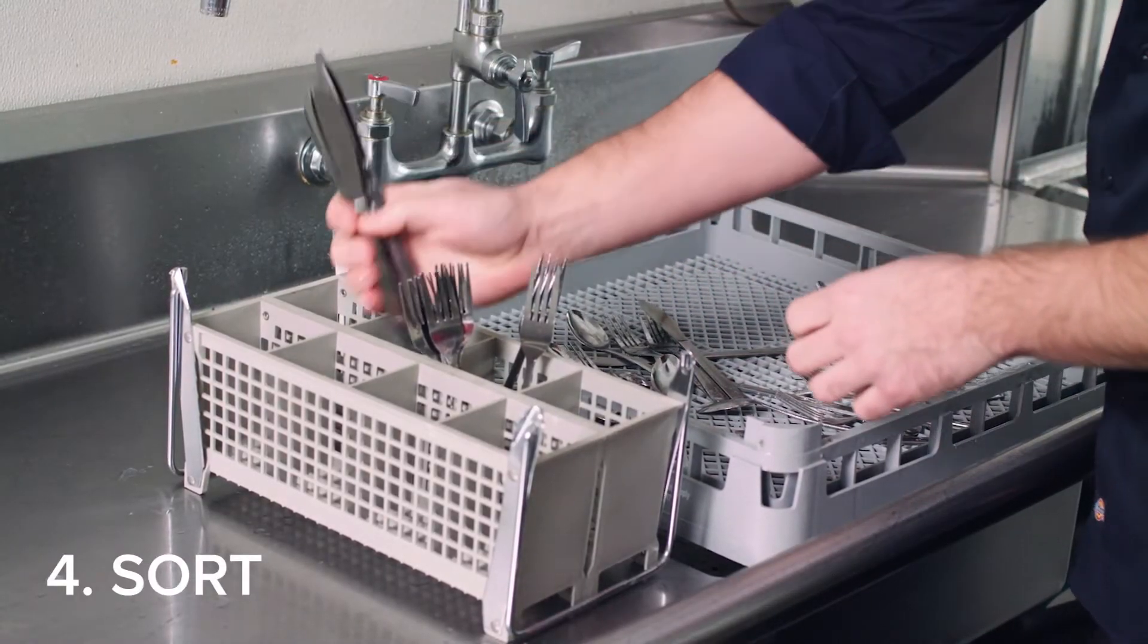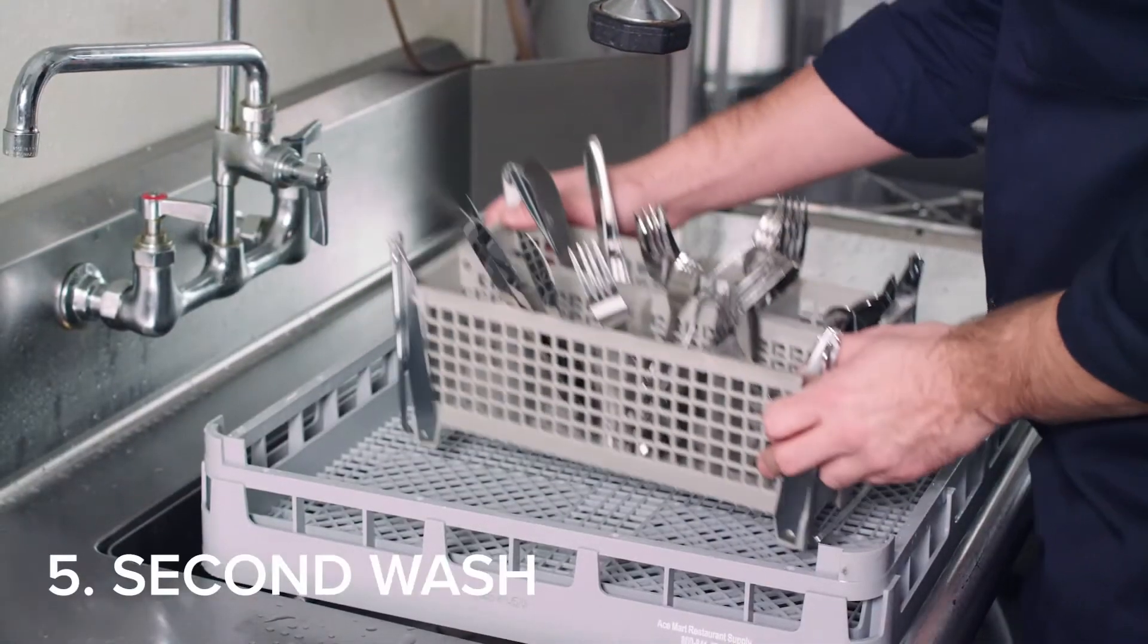When the cycle is complete, sort the utensils into a basket, handles down, and then wash a second time.